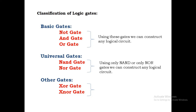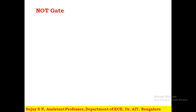Similarly, by using only NOR gates we can construct the same circuit without using any other gates. That's why these two are called universal gates. We also have other gates: XOR and XNOR. These gates are derived from basic gates. Now let us see what a NOT gate is.